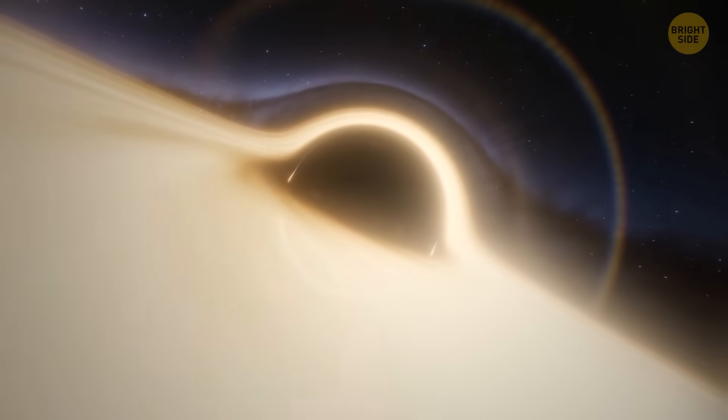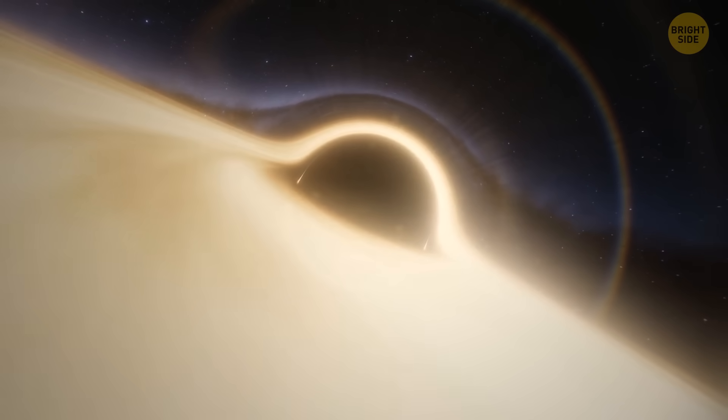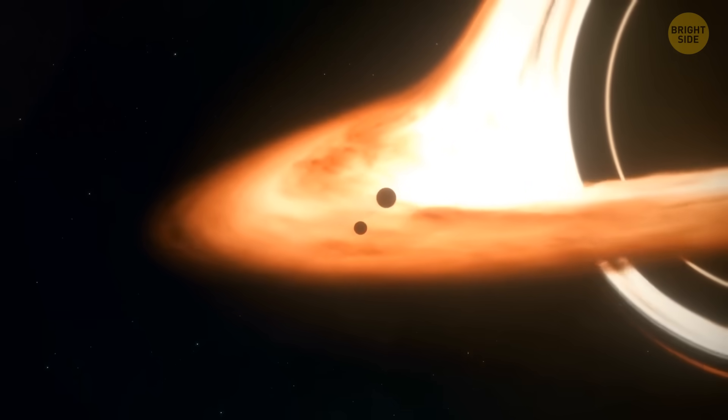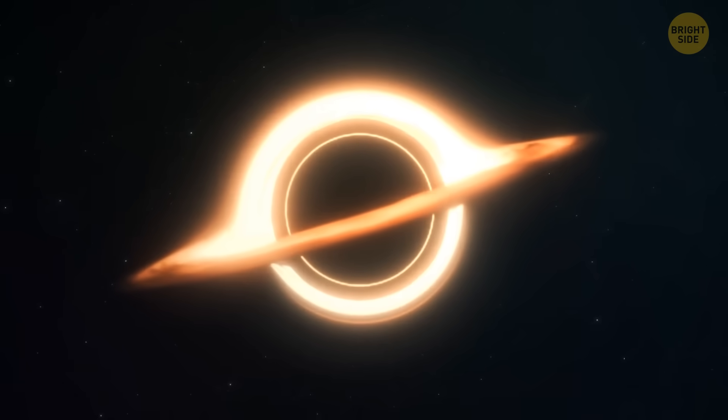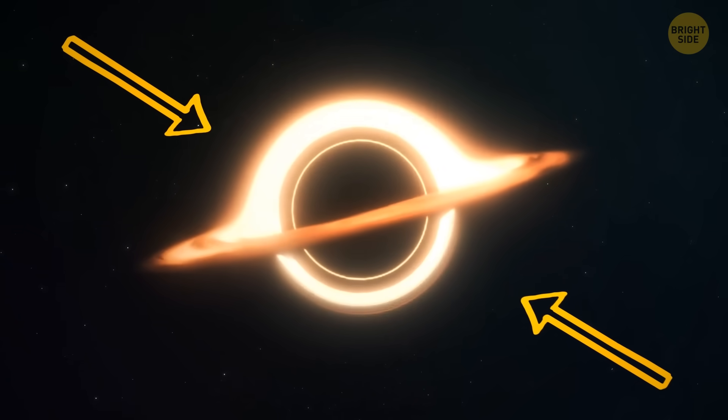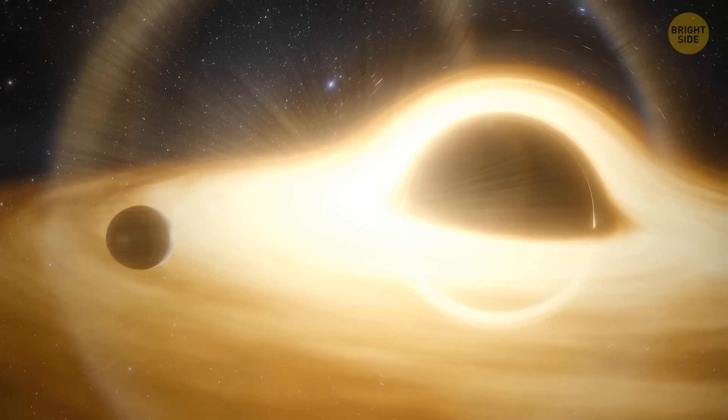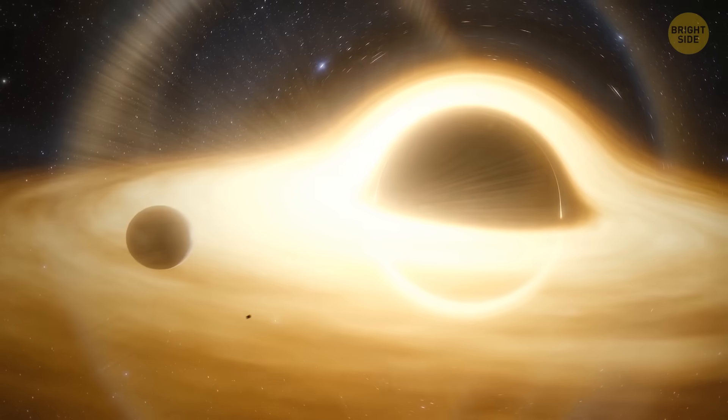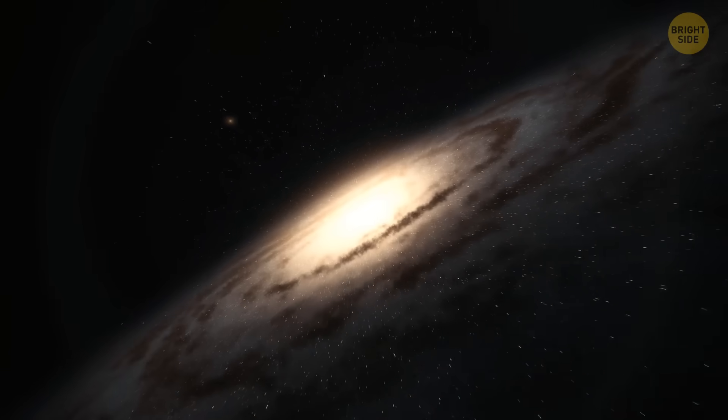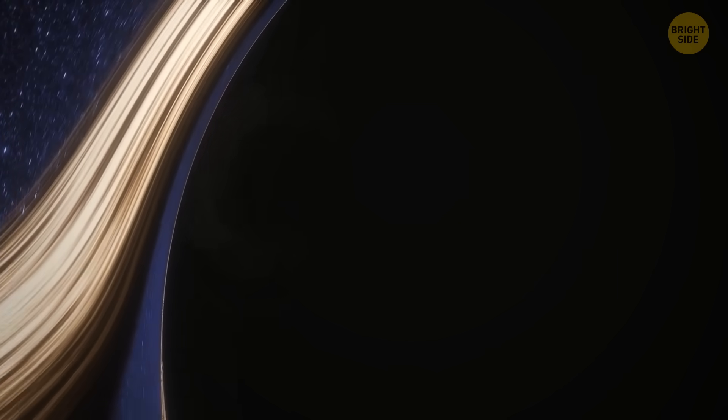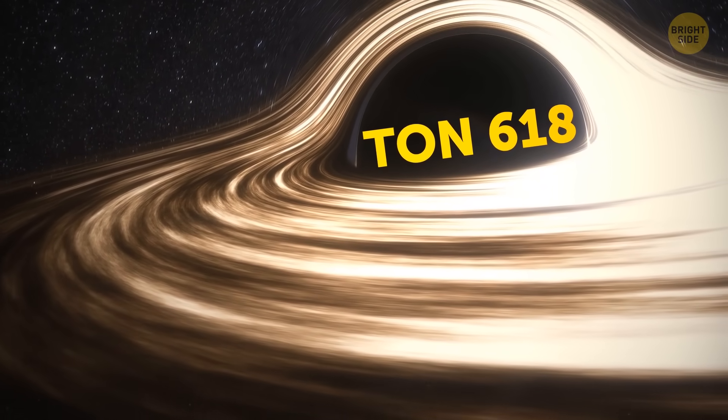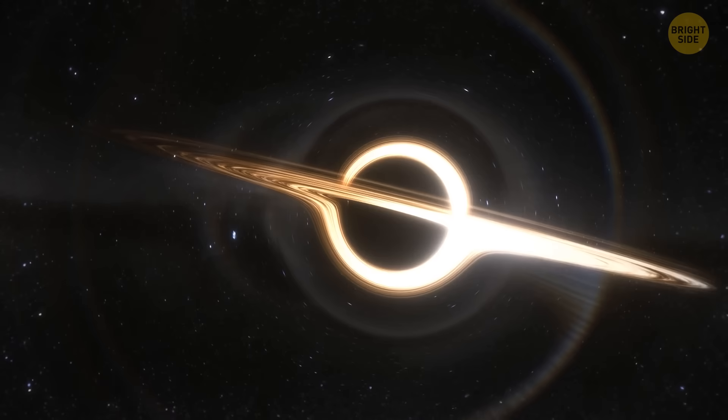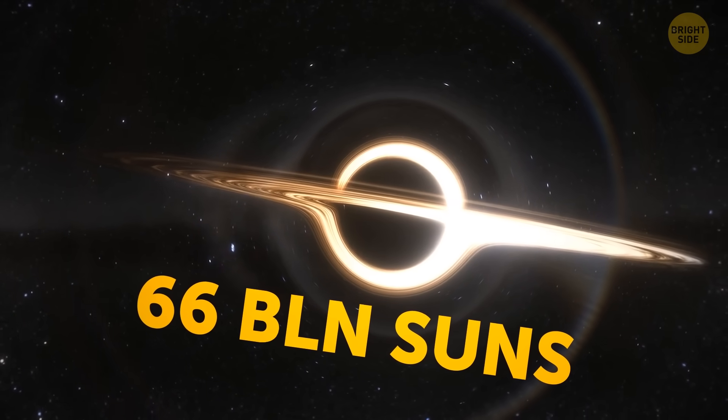A black hole is a spot in space where the pull of gravity is so strong that even light can't escape it. But why is gravity so powerful there? Because matter is squeezed into a teeny tiny space. Supermassive black holes, which can be many millions of times the mass of the Sun, tend to lurk in the centers of galaxies. The most massive black hole astronomers have discovered so far is TON 618. Its mass is equal to that of 66 billion Suns!